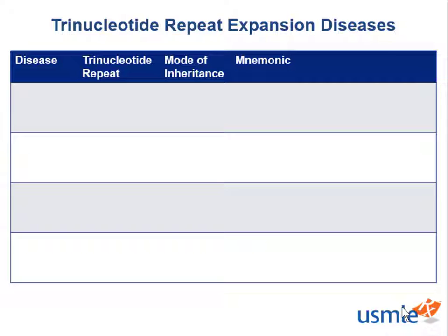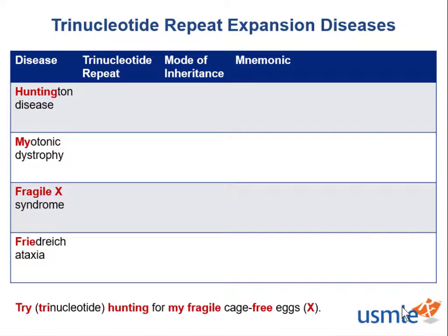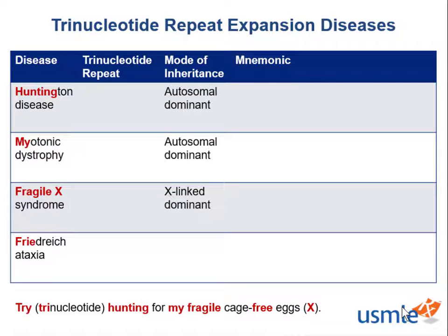Four of the trinucleotide repeat expansion diseases are Huntington disease, myotonic dystrophy, fragile X syndrome, and Friedreich's ataxia. We can remember this with the mnemonic 'tri-hunting for my fragile cage-free eggs,' with tri standing for trinucleotide, hunting for Huntington disease, my for myotonic dystrophy, fragile eggs for fragile X, and free in cage-free for Friedreich's ataxia. Huntington disease and myotonic dystrophy are autosomal dominant in inheritance, while fragile X is X-linked dominant, and Friedreich's ataxia is autosomal recessive.